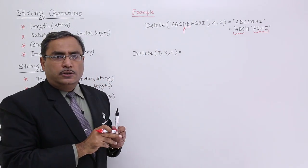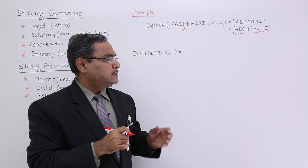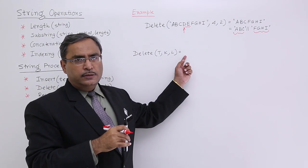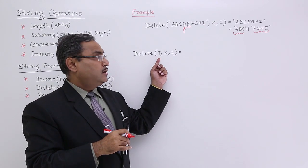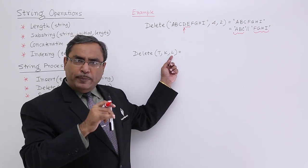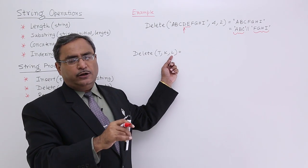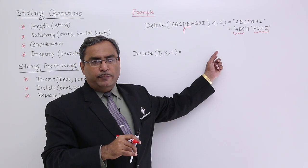Like before in case of insert, we went for some generic formula. This is my t, k, l. What is the t? That is the main text. What is the k? From which place. What is l? How many characters inclusive of that kth place are to be deleted. Let me write the generic form here.